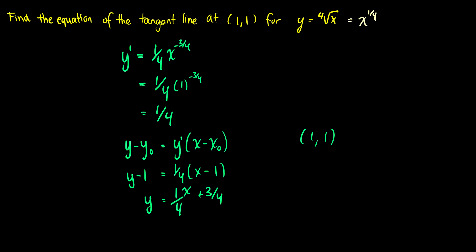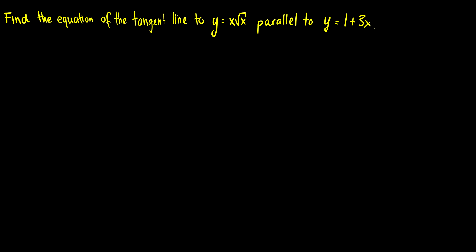Those were two fairly straightforward tangent line questions. For the third one, we want to find the equation of the tangent line to y equals x√x, parallel to the line y equals 1 plus 3x. We simplify y equals x√x to y equals x to the 3/2. The slope of y equals 1 plus 3x is 3. The derivative of x to the 3/2 is (3/2) times the square root of x, or 3√x over 2.